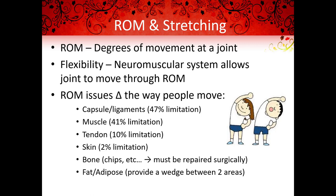Range of motion issues can change the way people move. Capsular or ligaments can result in a 47% limitation. Muscle can result in a 41% limitation. Tendons can result in up to 10% limitation. Skin, 2% limitation. If bone is restricting range of motion, it is likely from bone chipping off, which must be repaired surgically. Fat and adipose provide a wedge between two areas and can limit range of motion.